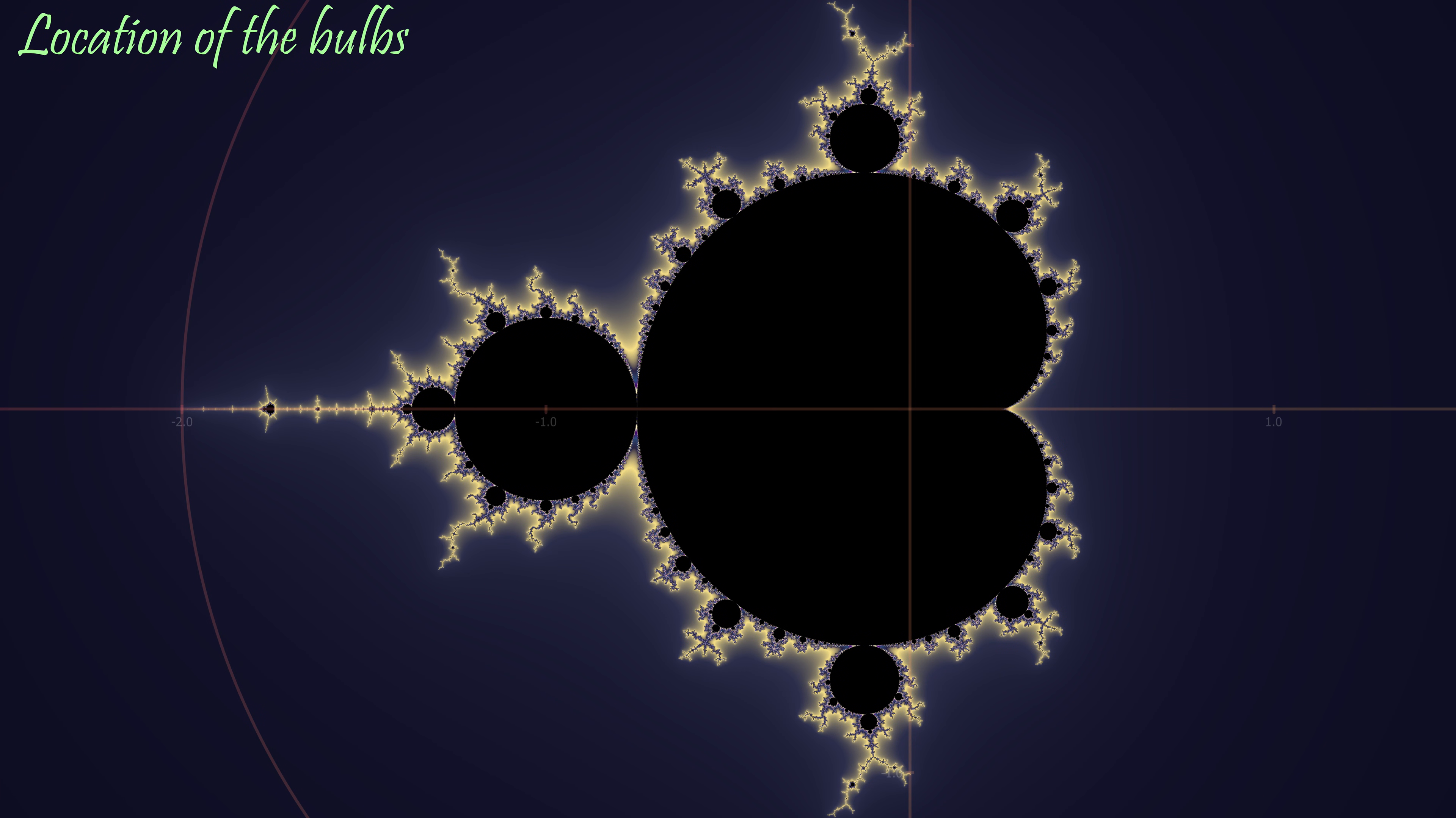So the next question we can ask is, exactly where are these bulbs attached? The period 1 area of the Mandelbrot set is known to be a perfect cardioid. The period 2 area is known to be a perfect circle, but other than that, there are no known perfect shapes. The bulbs are not circles, they are distorted.